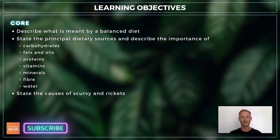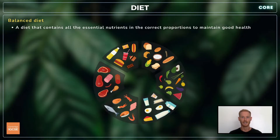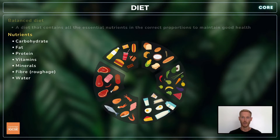There's no extended supplement for this lesson. A balanced diet is a diet that contains all the essential nutrients in the correct proportions to maintain good health. The nutrient groups are carbohydrate, fat, protein, vitamins, minerals, fibre, and water.